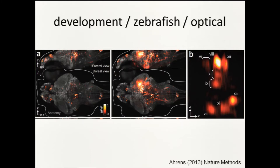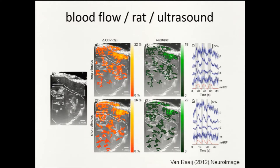One might want to look at blood flow in rats, and that can actually be done with ultrasound with high spatial resolution and high temporal resolution. This is looking at patterns of activation in the brain — here's one millimeter scale — in response to different stimulations, and the temporal pattern of activation with high temporal resolution.